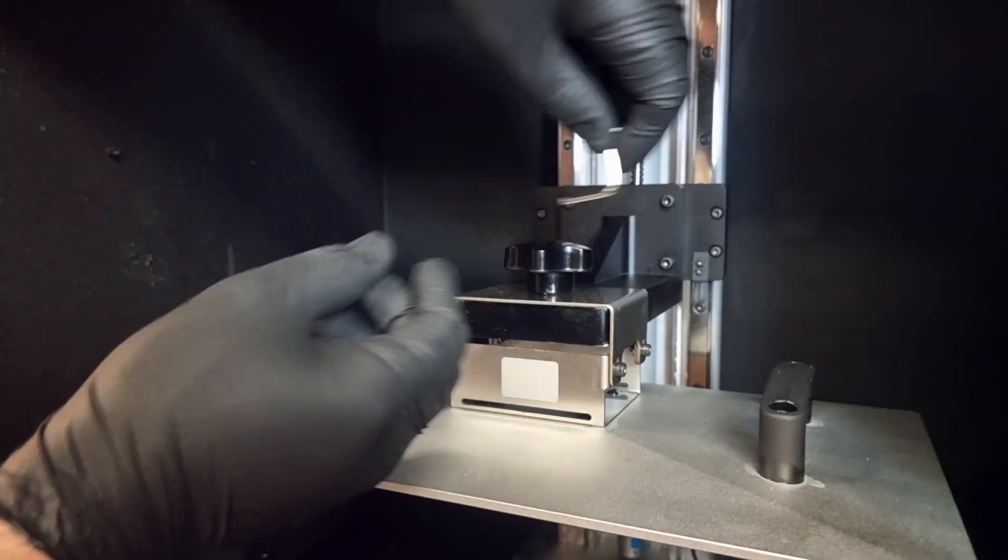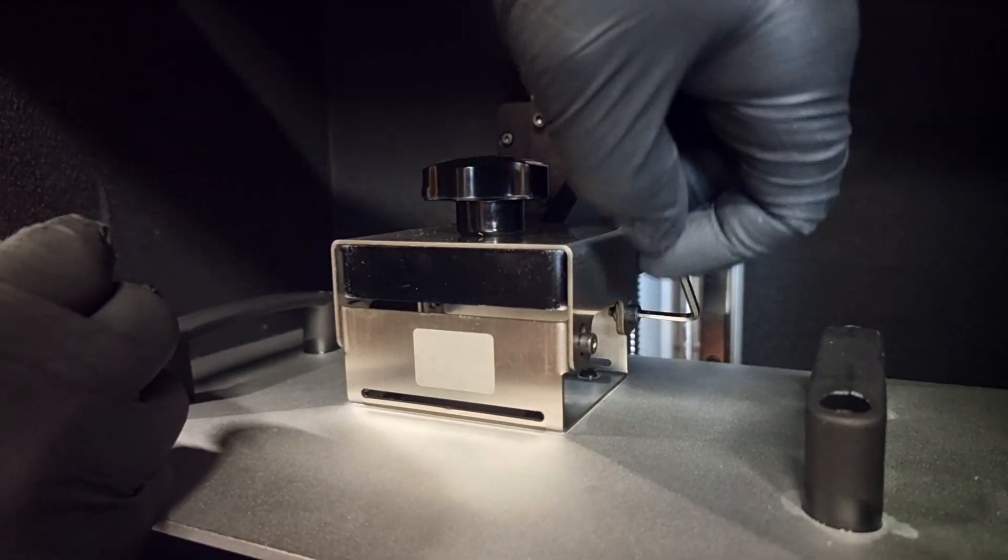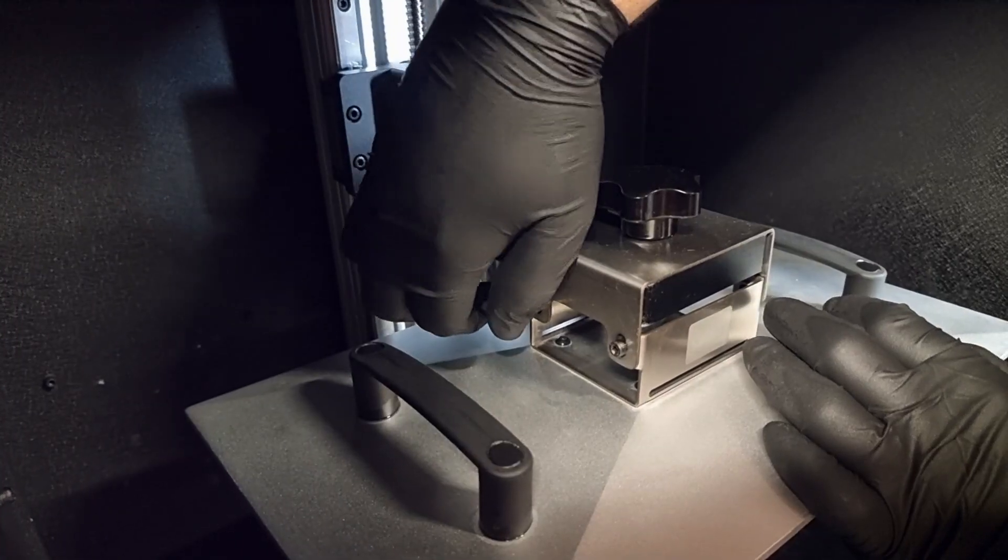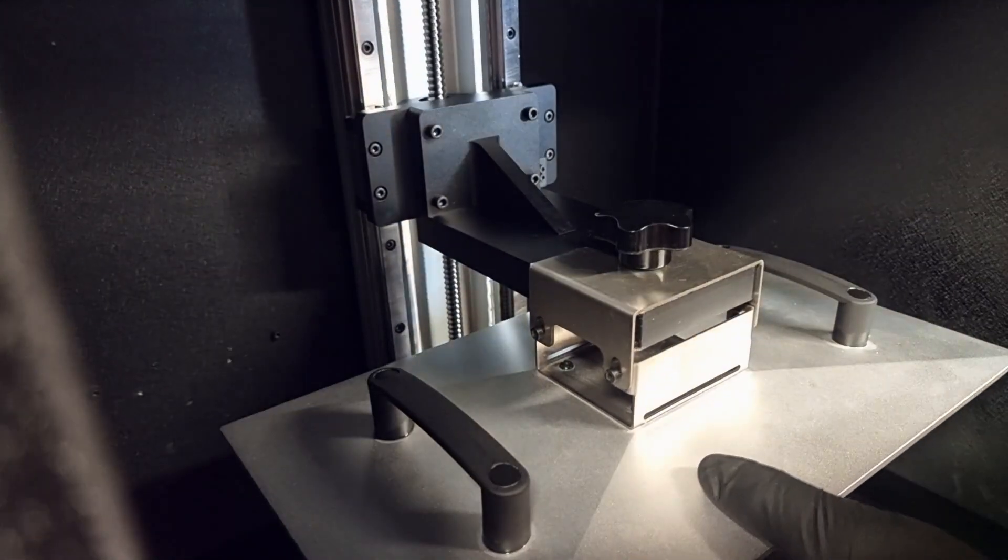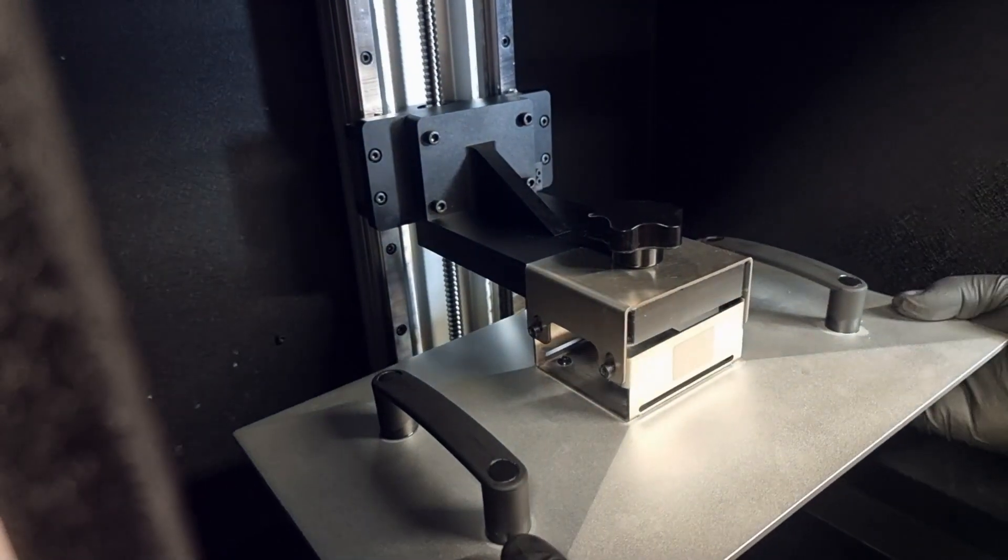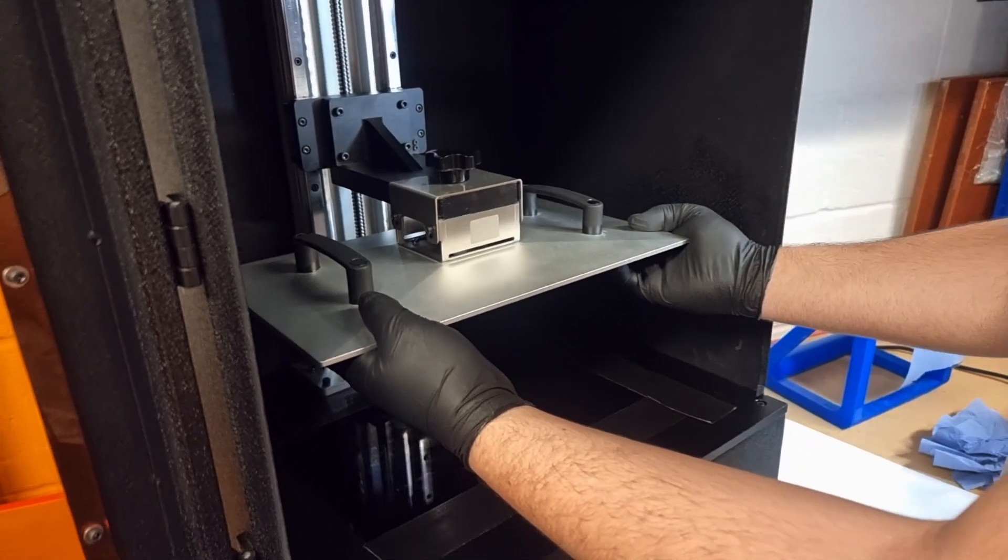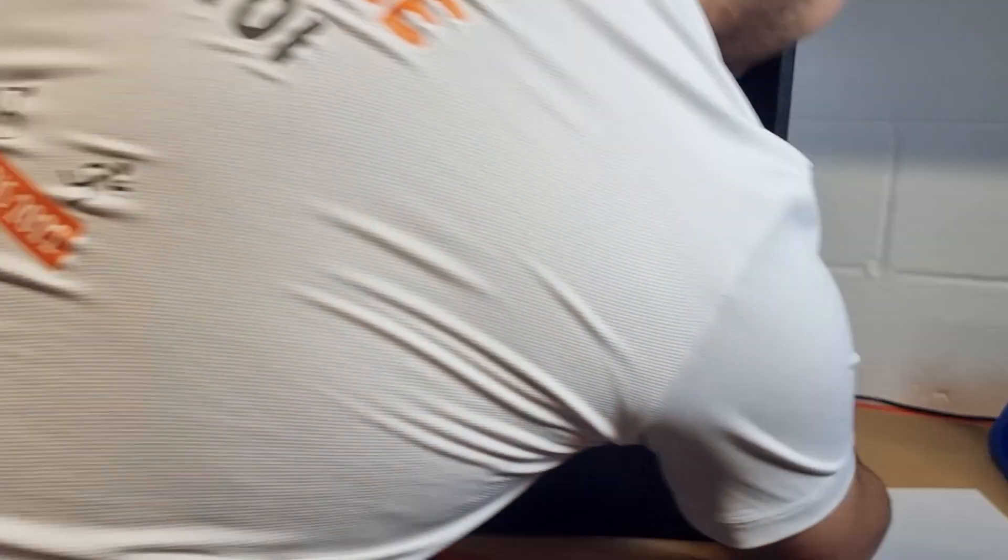After that, we take the Allen key that comes inside the toolbox of the 3D printer and we try to loosen up all the four screws of the 3D printer just on top of the build platform. After we loosen up all the screws, you can see here that the build platform is loose and ready to be calibrated. Now, it's time to turn on your 3D printer.